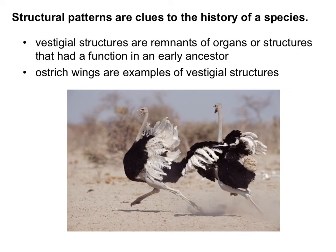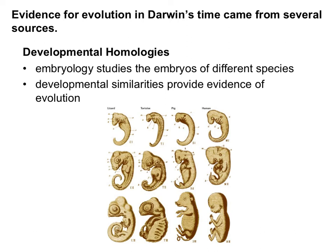Vestigial structures are evidence of evolution because they are remnants of organs or structures that likely had a function in an earlier ancestor. Any sort of structure that just seems useless right now exists because it was necessary in an ancestor. Ostrich wings are a great example. Wisdom teeth are a good example. The appendix is another. Those are all vestigial structures — you can think of them as the leftovers.